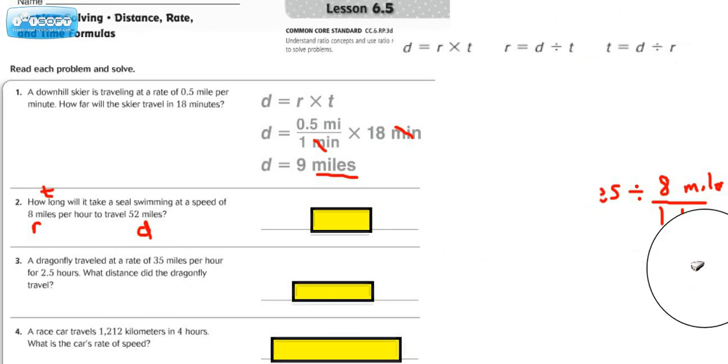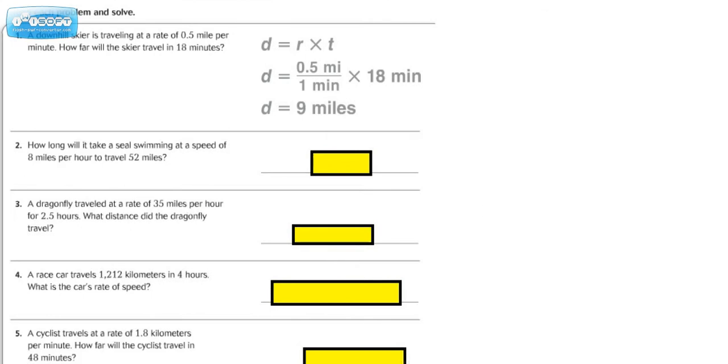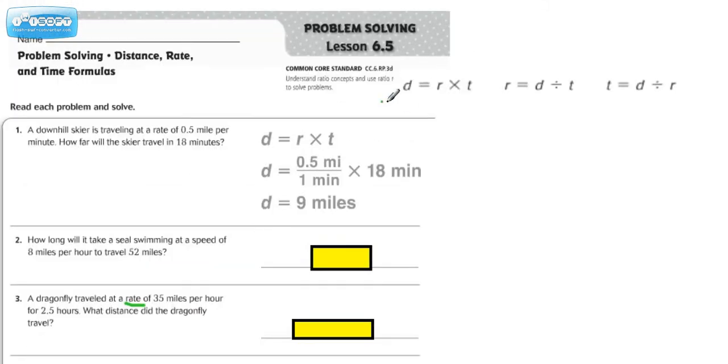A dragonfly traveled at a rate of, so that means they're giving us the rate, 35 miles per hour for 2.5 hours. What distance did the dragonfly travel? That means we're going to be using this formula.